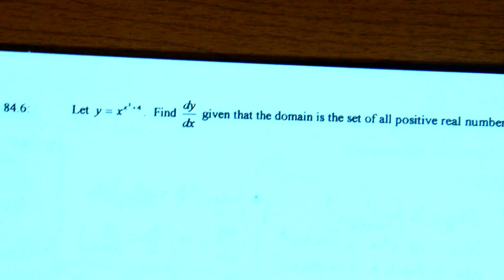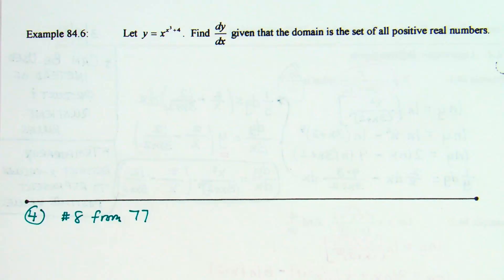Last one: let y equal x to the (x³ + 4). Find dy/dx given that the domain is the set of all positive real numbers — similar to last time. Natural log of both sides: natural log of y equals (x³ + 4) times natural log of x.